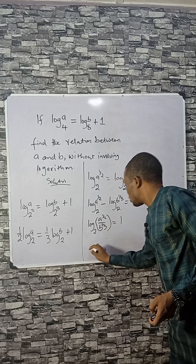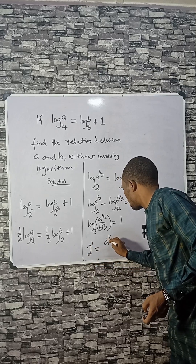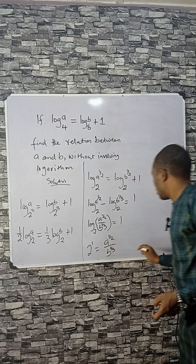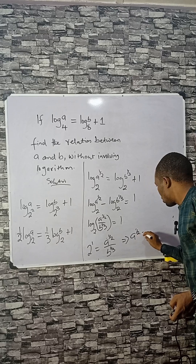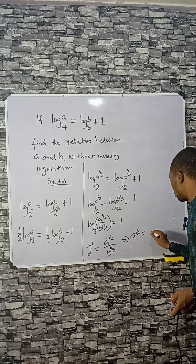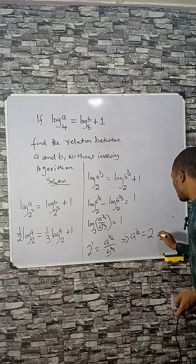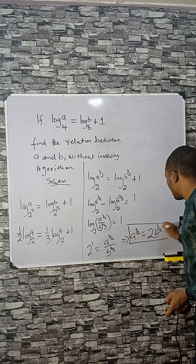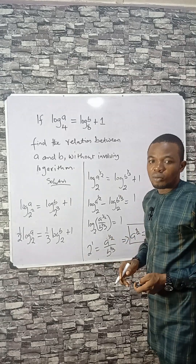So 2 raised to the power of 1 equals A^(1/2) divided by B^(1/3). Rearranging, A^(1/2) equals 2 times B^(1/3). This is the relationship between A and B without involving logarithms. Subscribe to this channel for more — bye bye!